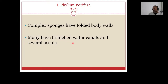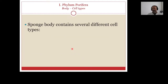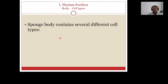Many sponges have branched water canals and several oscula. The most important property of sponges is that they lack true tissues — there are no true tissues in sponges. That is why we classify them under Parazoa. A sponge body contains several different cell types, and this is why sponges are different from protozoa or protists — that is why we call them animals.